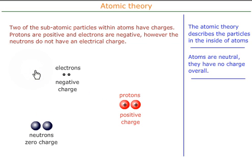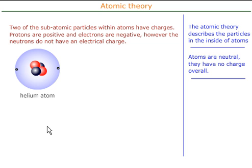For each atom — in this particular case, helium — there are the same number of electrons as there are protons. Two electrons, two protons, the charges cancel out. Neutrons themselves carry no charge, so overall the charge on the atom is neutral.